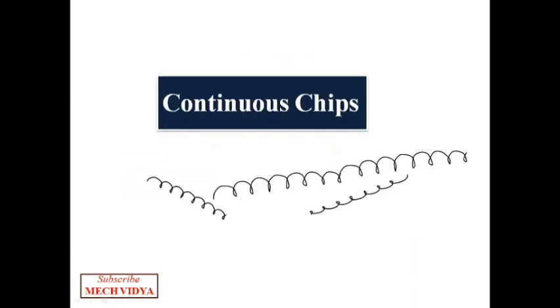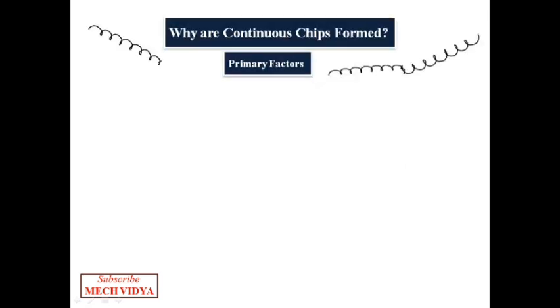The continuous chips are long ribbon-like chips which come out in coil forms. Now let us try to understand the primary factors which result in the formation of this kind of chips.